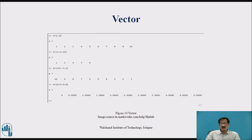Next, x = 1:10 — the double colon notation — will display the numbers between 1 to 10. x = 1:2:10 will display elements of x between 1 to 10 with a difference of 2, so it will be 1, 3, 5, 7, 9.